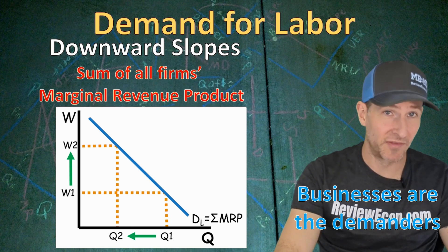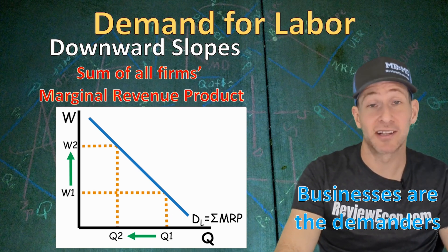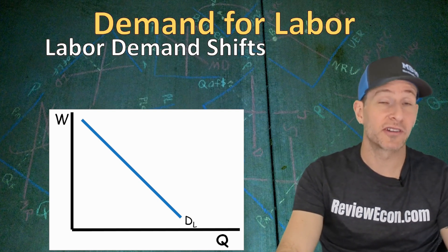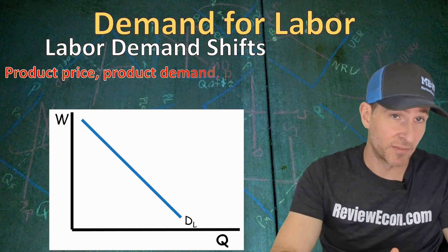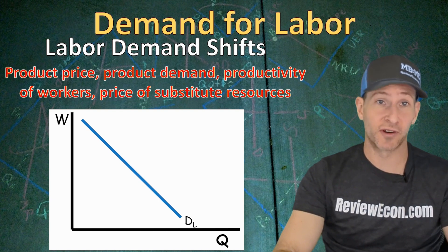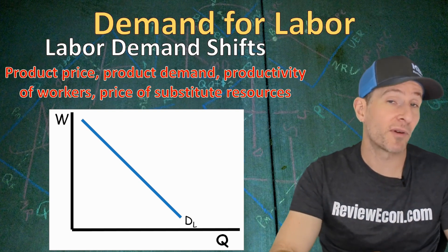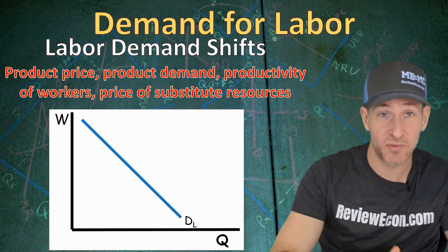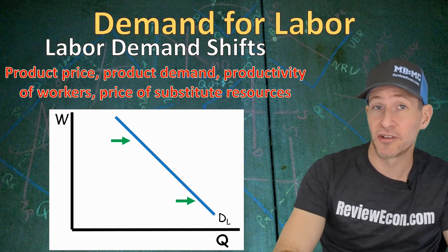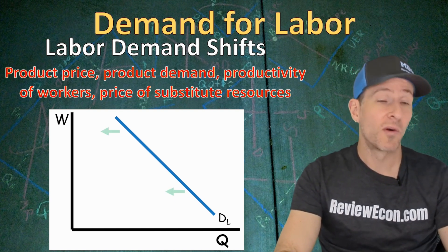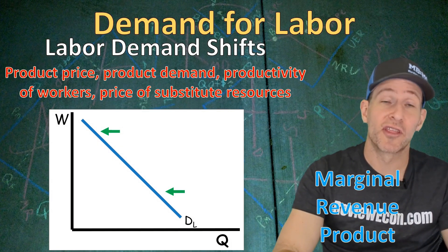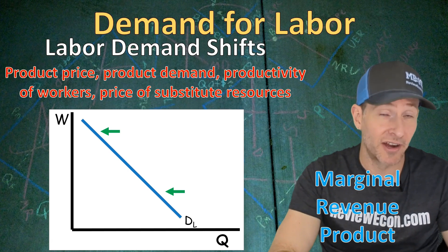Remember, businesses within this market are the demanders, not the suppliers like you've seen in previous units. The labor demand curve will shift with anything that changes the marginal revenue product for these workers — it could be the price of the actual product, the demand for the product itself, the productivity of the workers (since more productive workers have a higher MRP), or the price of a substitute resource like machines. An increase in the demand for workers shifts the curve rightward; a decrease shifts it leftward. That downward sloping demand curve represents the marginal revenue product of the workers hired by these firms.